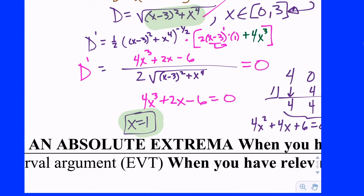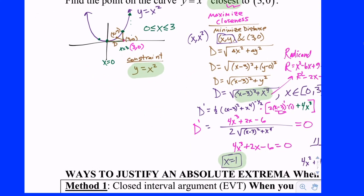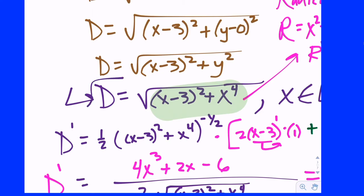There's only one critical value, x equals 1, and it's in our relevant domain between 0 and 3. But in the previous problems, the endpoints didn't make sense — here they do. So we have three candidates: x equals 0, x equals 1, and x equals 3. We plug each into the distance formula. At x equals 0: square root of 9 plus 0 equals 3. At x equals 3: square root of 0 plus 81 equals 9. At x equals 1: square root of (1 minus 3) squared plus 1 to the fourth equals square root of 4 plus 1 equals square root of 5, which is about 2 point something. The minimum distance is square root of 5, occurring at x equals 1.